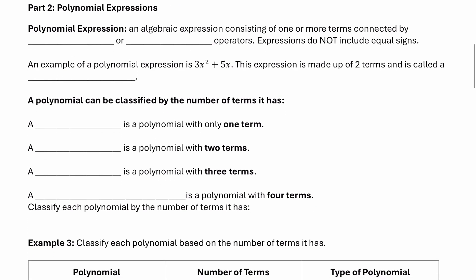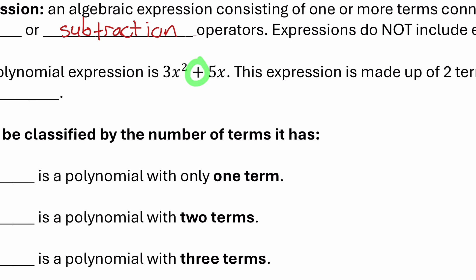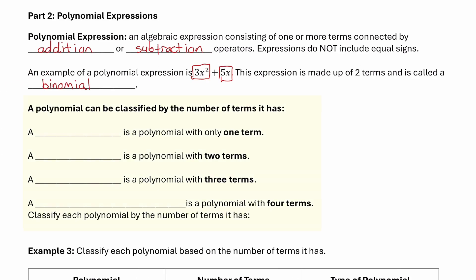Now let's move on to polynomial expressions. A polynomial expression is an algebraic expression consisting of one or more terms connected by addition or subtraction operators. Expressions do not include equal signs. For example, 3x squared plus 5x is a binomial — it's made up of two terms separated by the addition operator. Polynomials are classified by number of terms: one term is a monomial, two terms is a binomial, three terms is a trinomial, and more than three terms we name by the count, such as a four-term polynomial.